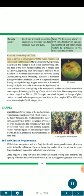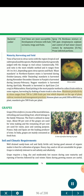Maturity and Harvesting: Time of harvest in citrus varies with the region (tropical and subtropical) and the species. Marketable maturity is generally judged by change in rind color. Commercially, TSS:acid ratio is the most reliable method, ranging from 10:1 to 16:1 depending on citrus species and flush. Khasi mandarin in northeastern states is harvested during October–January, Darjeeling mandarin during November–December, Kino in Punjab during January–February, Nagpur mandarin during April–July, and Mosambi during April–June (1st crop) in Maharashtra. Handpicking is the most popular method. Maximum productivity in citrus ranges from 700 to 1000 fruits per tree. Kino plant can yield 300 to 800 fruits/plant; mandarin gives 500 fruits per plant.